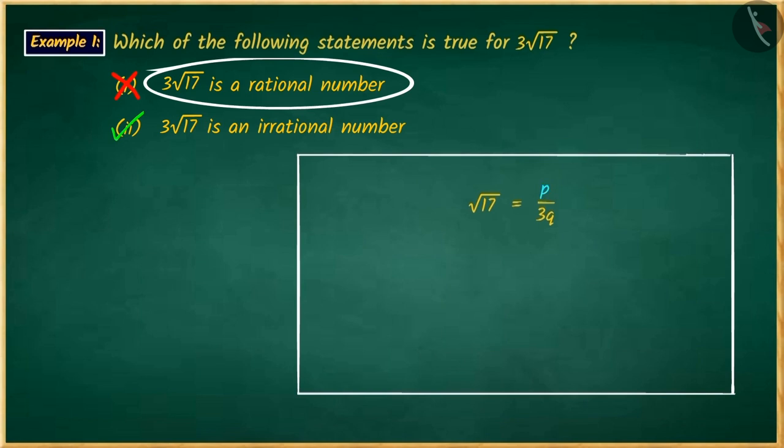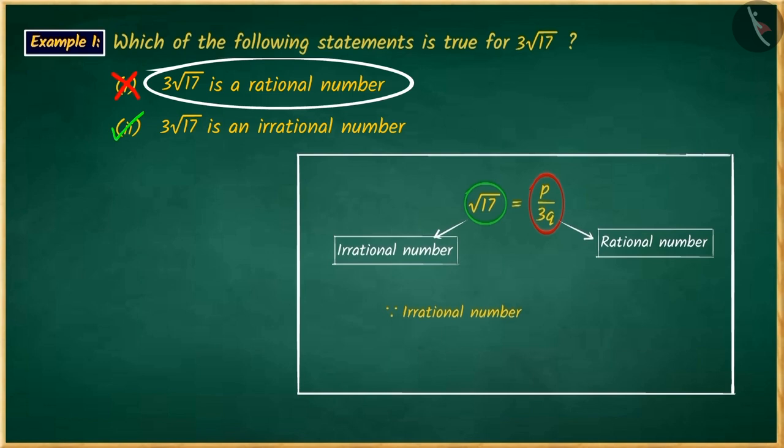You have determined that on the right-hand side, p and q are integers. So p over 3q will be a rational number. Hence, on the left side, square root of 17 should also be rational. But you missed out the fact that square root of 17 is an irrational number and no irrational number can be equal to a rational number. Because of this, your answer is wrong.